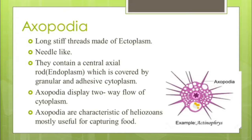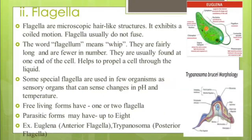Axopodia is another type of pseudopodium. It is a long, stiff, thread-like structure made up of ectoplasm with needle-like projections. They contain a central axis — a rod-like central structure made up of endoplasm — covered by granular and adhesive cytoplasm. Axopodia display a two-way flow of cytoplasm and are characteristic of Heliozoans, which are mostly circular in shape. Axopodia mainly help in capturing food. You can see this in the diagram of Acanthamoeba, which shows axopodia as its locomotory organelles.